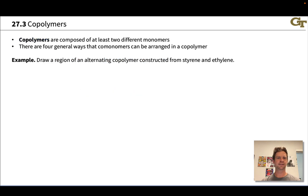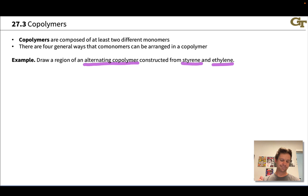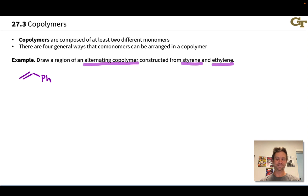To put this idea into practice, let's imagine drawing an alternating copolymer composed of two monomers — styrene and ethylene. Let's remind ourselves of the structures of the monomer units. Styrene is alkenylbenzene, or 1-phenylethylene, and ethylene is just C₂H₄.